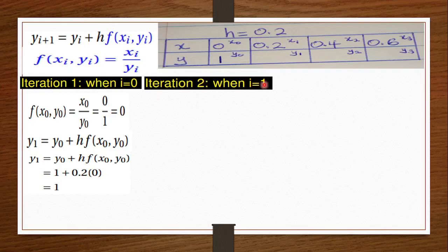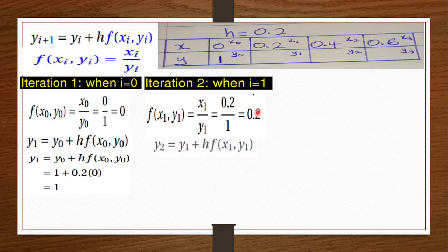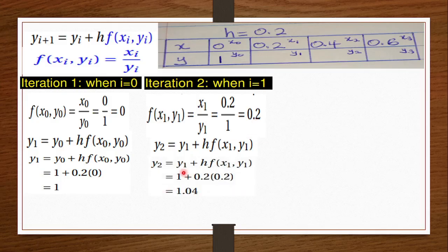For the second iteration, i=1. The formula becomes y2 = y1 + h·f(x1, y1). We compute f(x1, y1) = x1/y1. x1 is 0.2 and y1 is 1 from the previous iteration, so f = 0.2/1 = 0.2. Substituting: y2 = 1 + 0.2×0.2 = 1 + 0.04 = 1.04. So y2 equals 1.04.